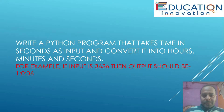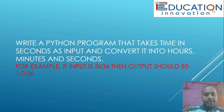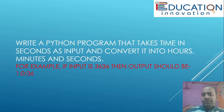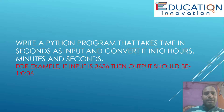Here is the first question: Write a Python program that takes time in seconds as input and convert it into hours, minutes and seconds. For example, if input is 3636, then output should be 1:0:36.